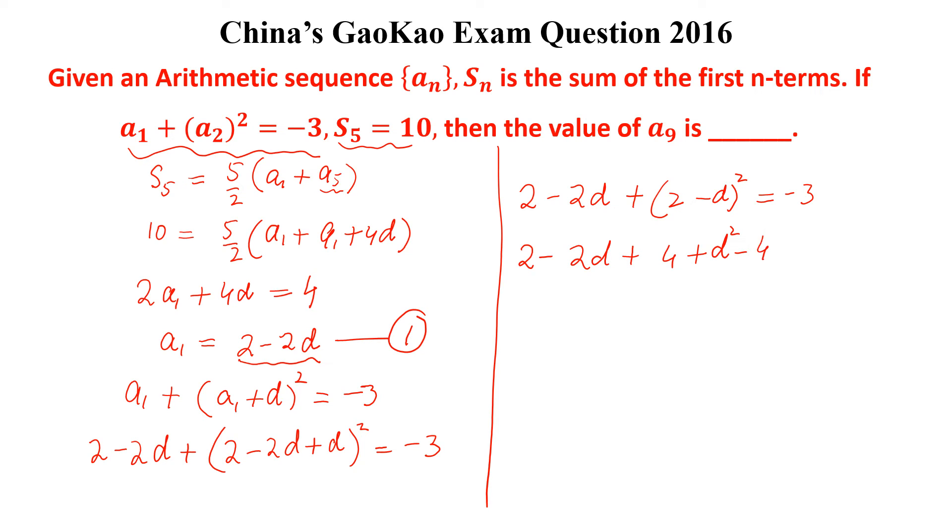Now we can simplify more and we will get d² - 6d + 9 = 0, which is a quadratic equation. If we solve this quadratic equation we will get d = 3. From this equation we get a_1 = -4, so d = 3 and a_1 = -4.